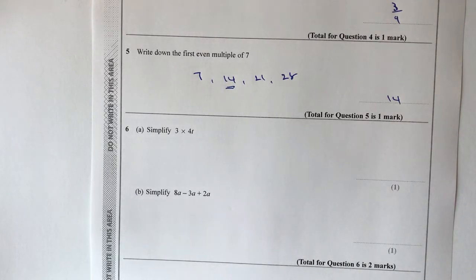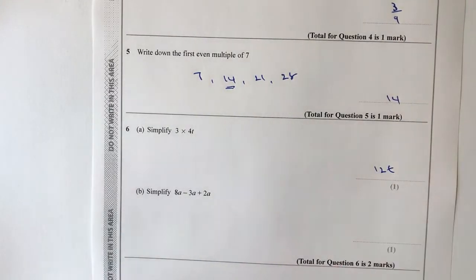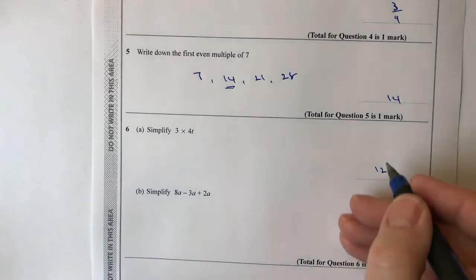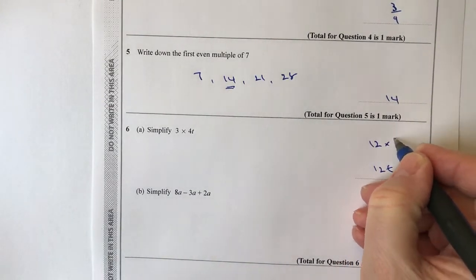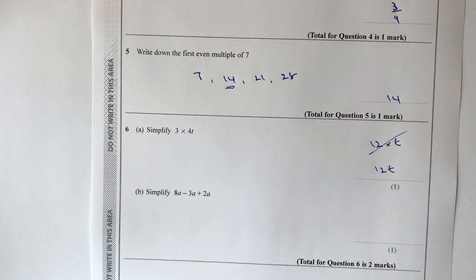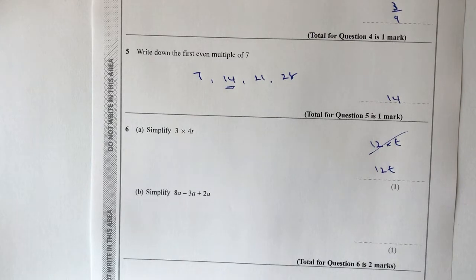Question six says simplify 3 times 4t. That's the same as 3 lots of 4t, which is 12t. Just be careful — they are not looking for you to write '12 × t'; you should write 12t. Introducing a multiplication sign back in would not be correct, and it's a one-mark question so they may not give you the benefit of the doubt.